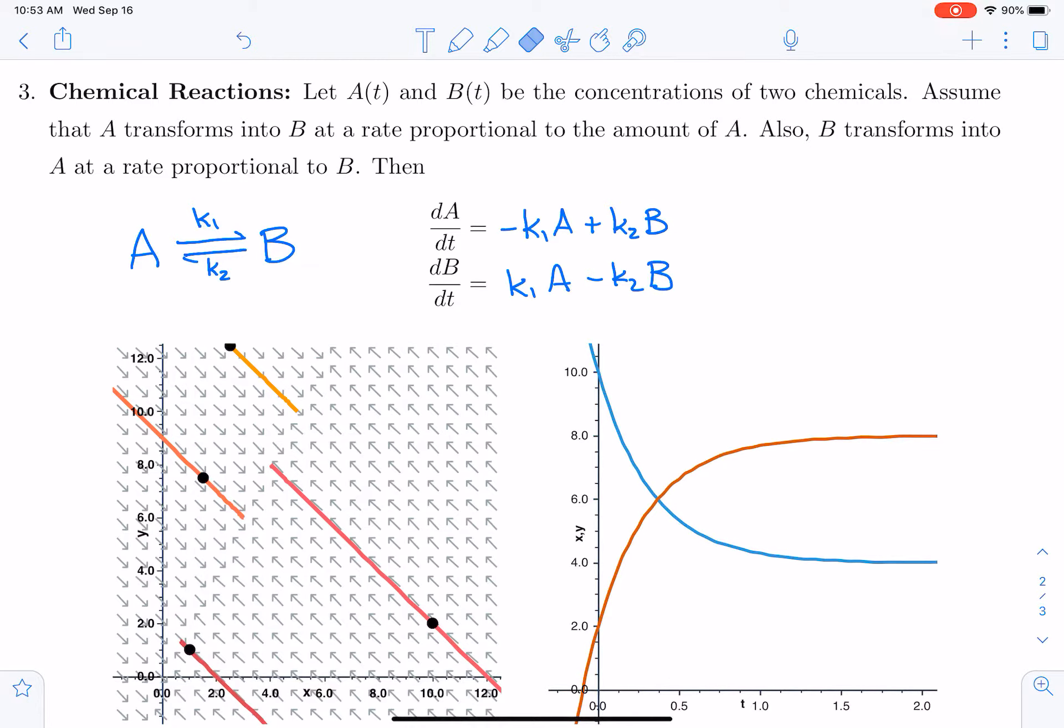Now there's something interesting about this system of differential equations. We can actually look at dA/dt plus dB/dt—by the way, that's the same thing as the derivative of A plus B—and we notice that if we sum these two equations, they sum to zero. So the derivative of A plus B is equal to zero. That tells us that A plus B must be equal to a constant.